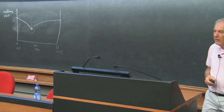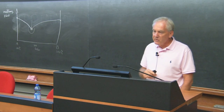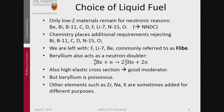So then you get to the choice of the liquid fuel. For neutronic reasons, you can only have the low-Z materials like beryllium, bismuth, boron-11. Why can't you have boron-10? That's an easy one — I'll show it to you. The allowed elements are: carbon, deuterium, fluorine, lithium-7, nitrogen-15, and oxygen. Note that I put isotope numbers there with some of them — some isotopes are acceptable and some are not.